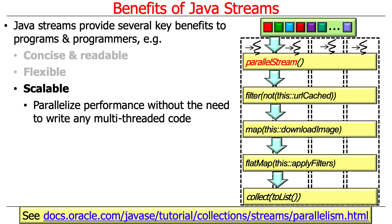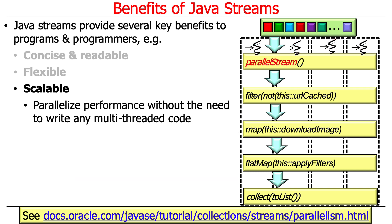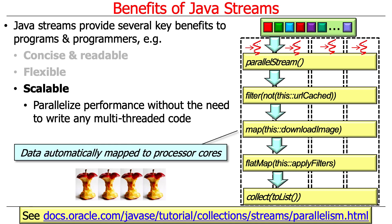One of the cool things is that we can use the streams framework to automatically map threads of control to processor cores. The threads are created by the fork join pool framework under the hood, and then these threads are mapped by the JVM and the underlying OS kernel to the processor cores. Assuming all goes well, you get a transparent speedup with pretty much no extra effort other than changing stream to parallel stream. If you have a lot of data to work on and a lot of work to perform per sample, you can end up with a really nice speedup without much additional programming.